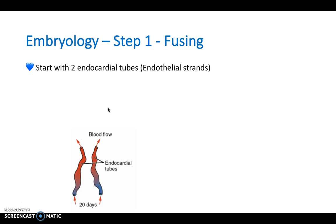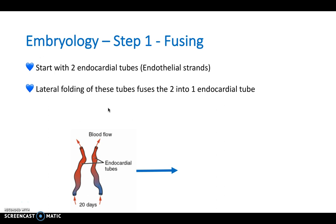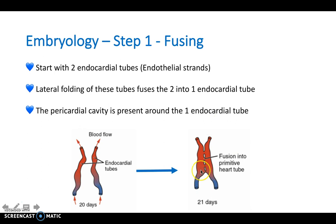Think about embryology in three simple steps for the heart. Step one is fusing: you start with two endocardial tubes which fuse to form one endocardial tube, with the pericardial cavity present around this endocardial tube.